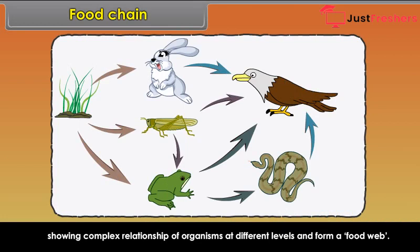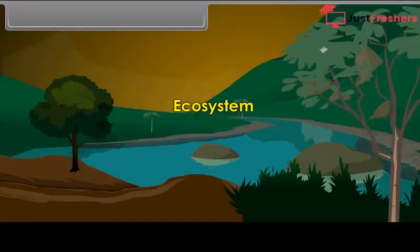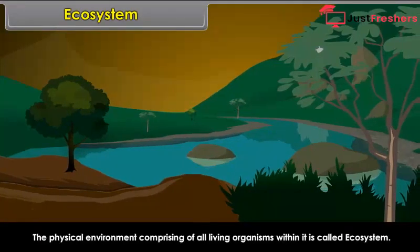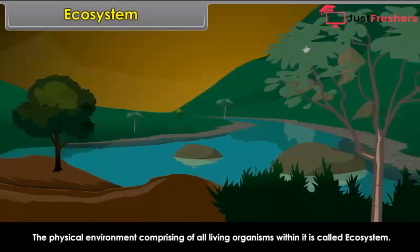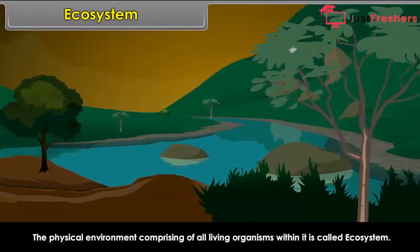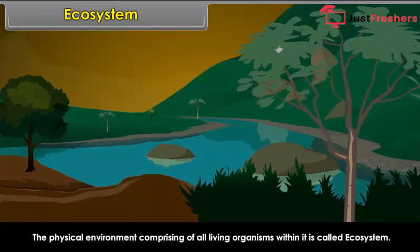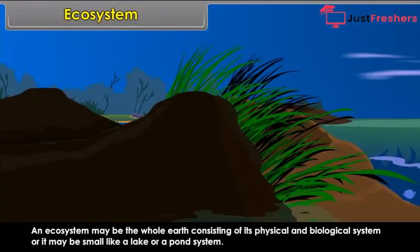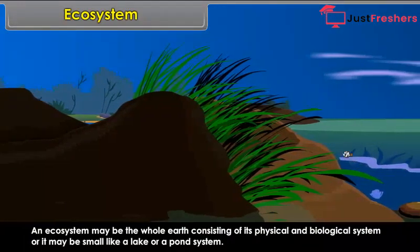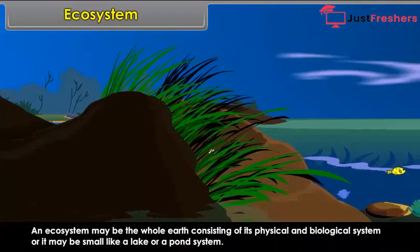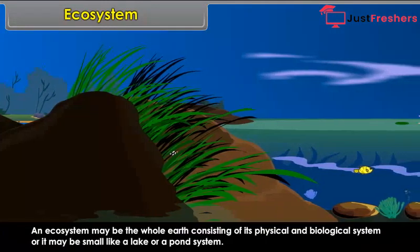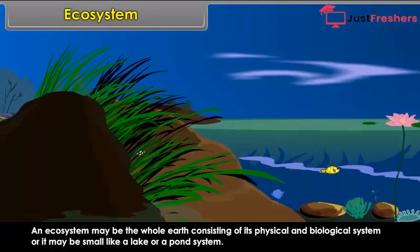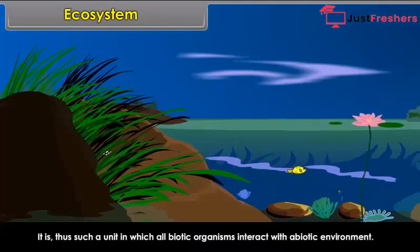Ecosystem: The physical environment comprising all living organisms within it is called an ecosystem. An ecosystem may be the whole earth, consisting of its physical and biological system, or it may be small like a lake or a pond system. It is a unit in which all biotic organisms interact with the abiotic environment.